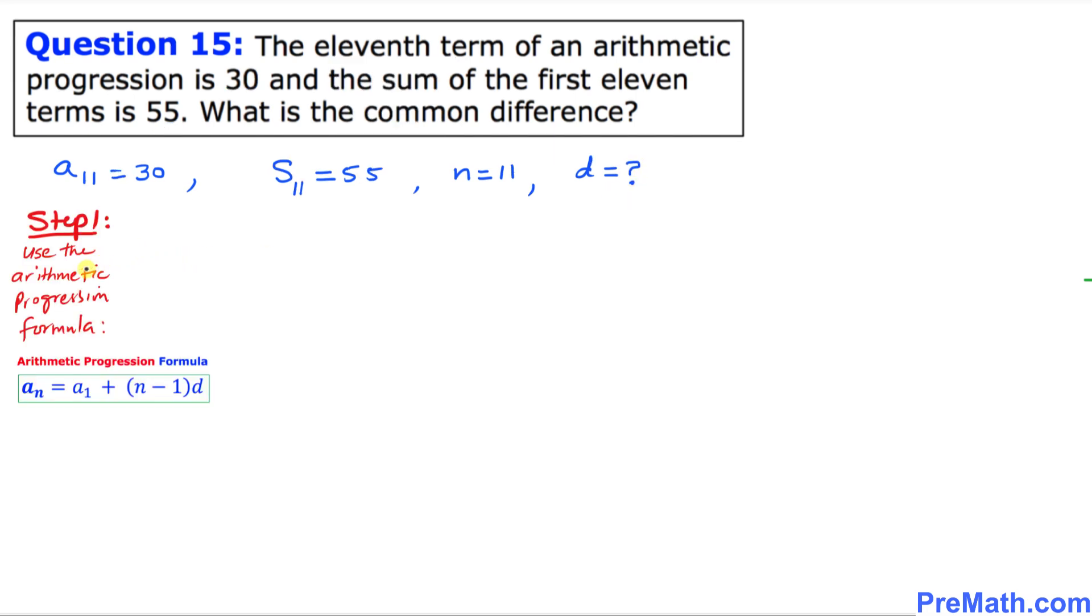In the very first step we are going to use this arithmetic progression formula. Let's write down this formula. A of N equals A of 1 plus N minus 1 times D. We know in our case A of N is A of 11. So I can write A of 11 equals, we don't know A of 1 the first term, just leave it there.